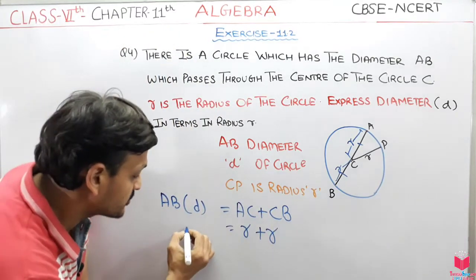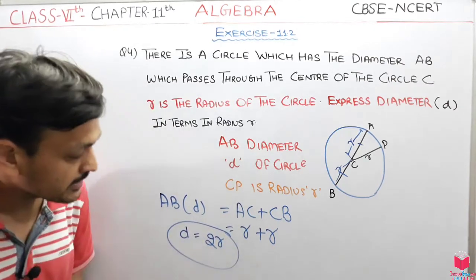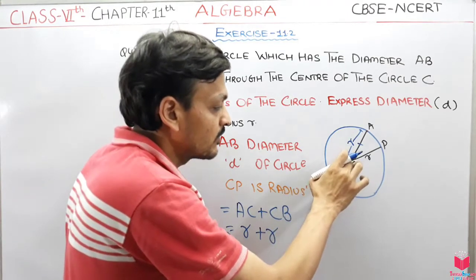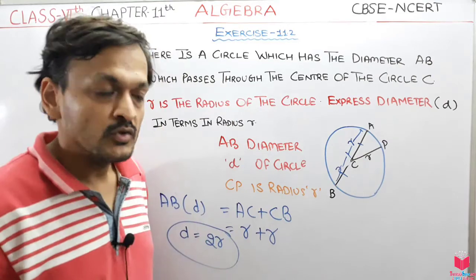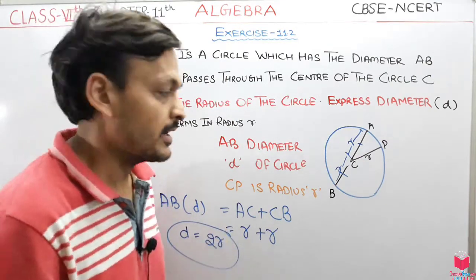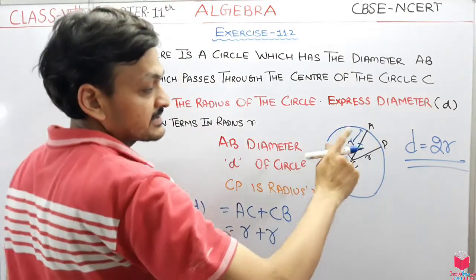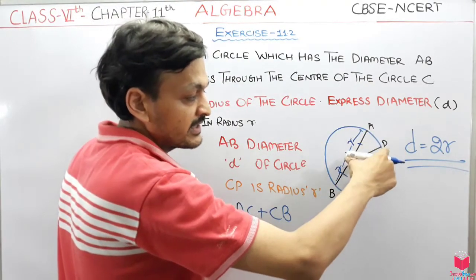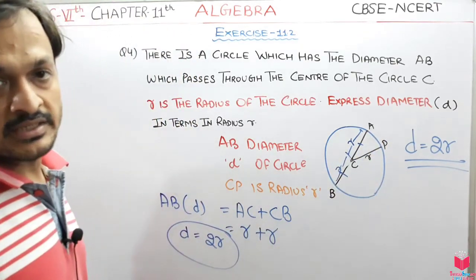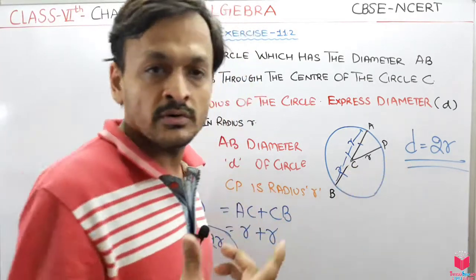तो इसको हम क्या लिखेंगे? Diameter जो हमारे पास है D, वो equal होता है 2r को। यह आपका answer बन गया। Diameter of the circle हमेशा 2r होता है, 2 multiply by r। यह याद रखना। ऐसा इसलिए है क्योंकि diameter center से पास होता है, पूरी एक line होती है, और radius आधा होता है जो center से circle की boundary तक जाता है — तो दोनों को मिलाद दो तो diameter बनता है।